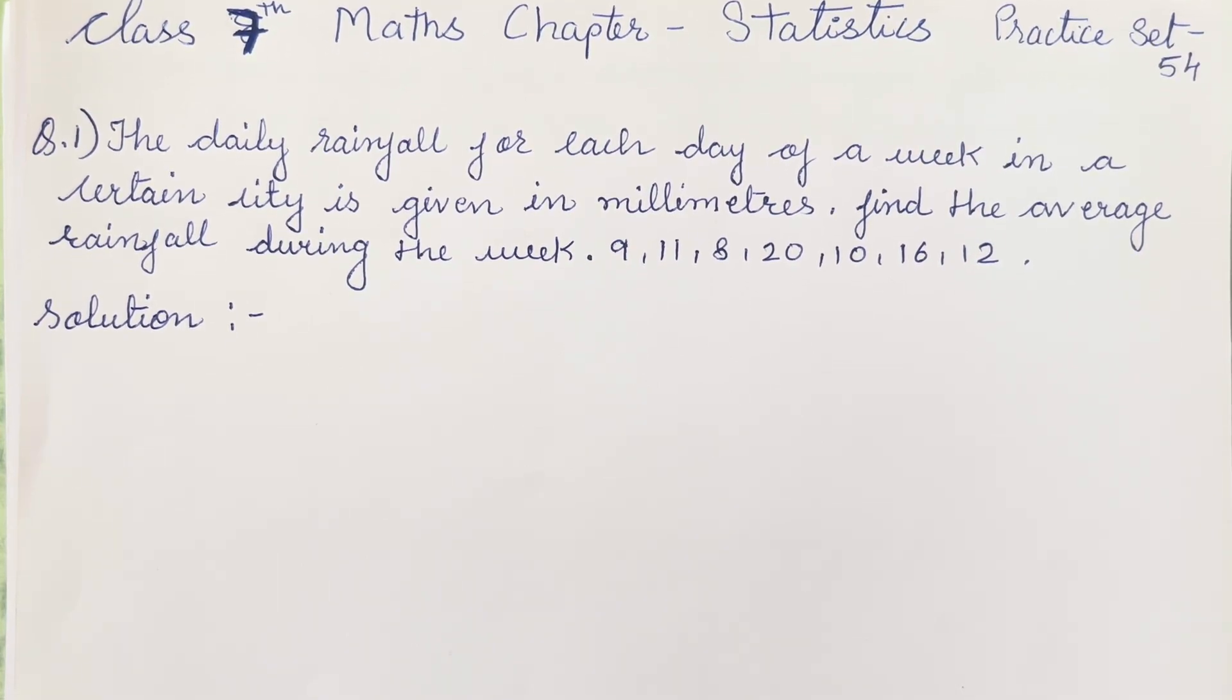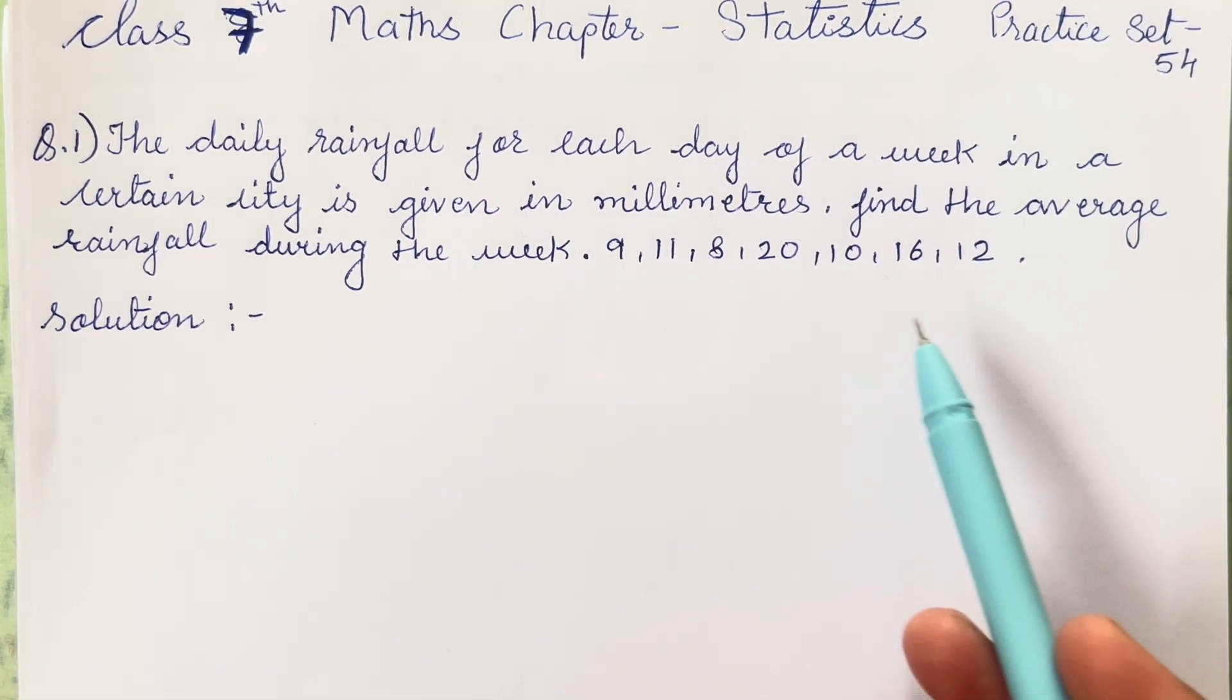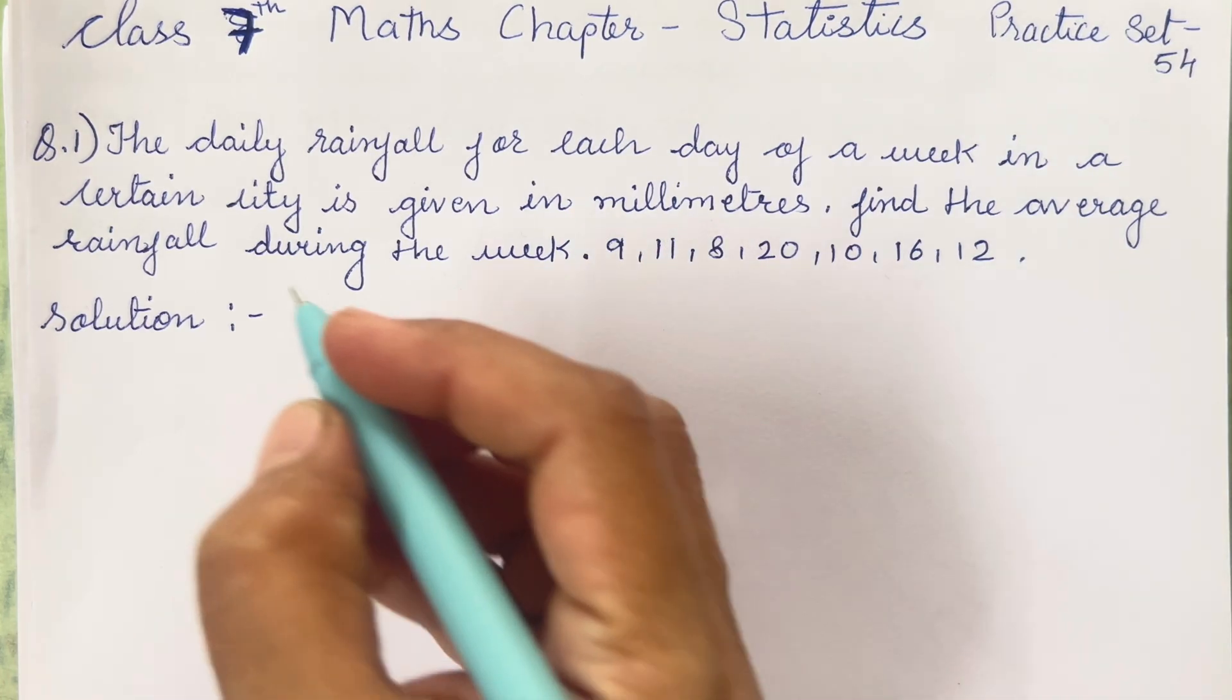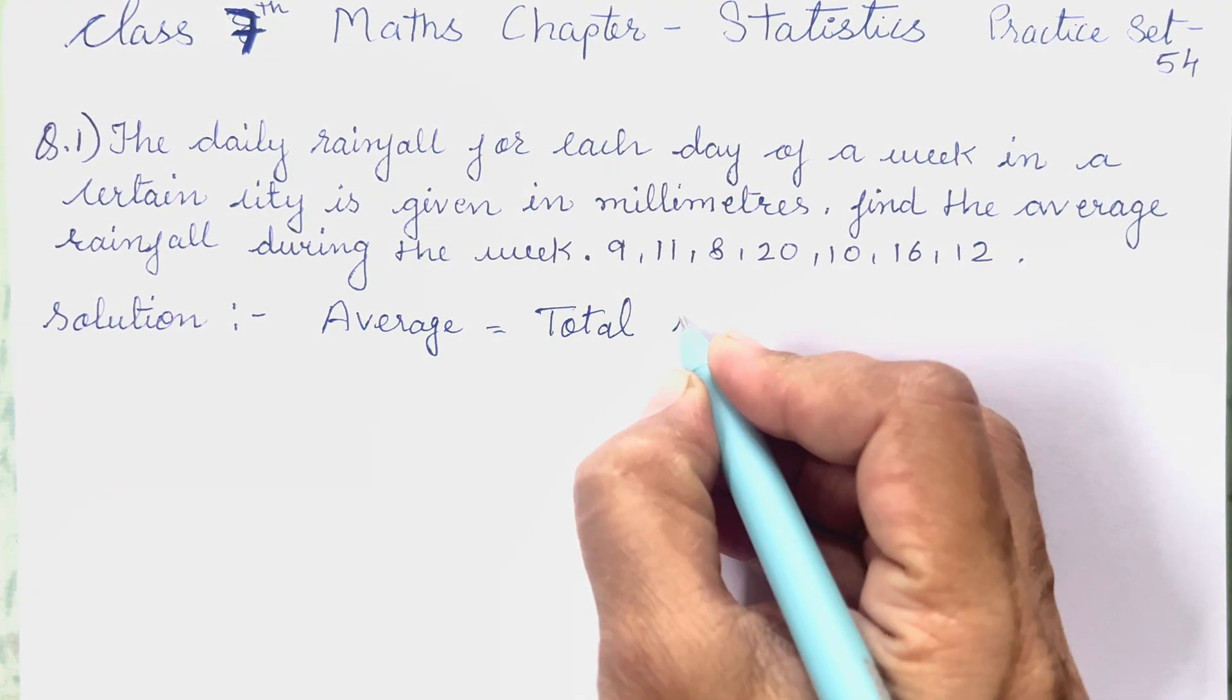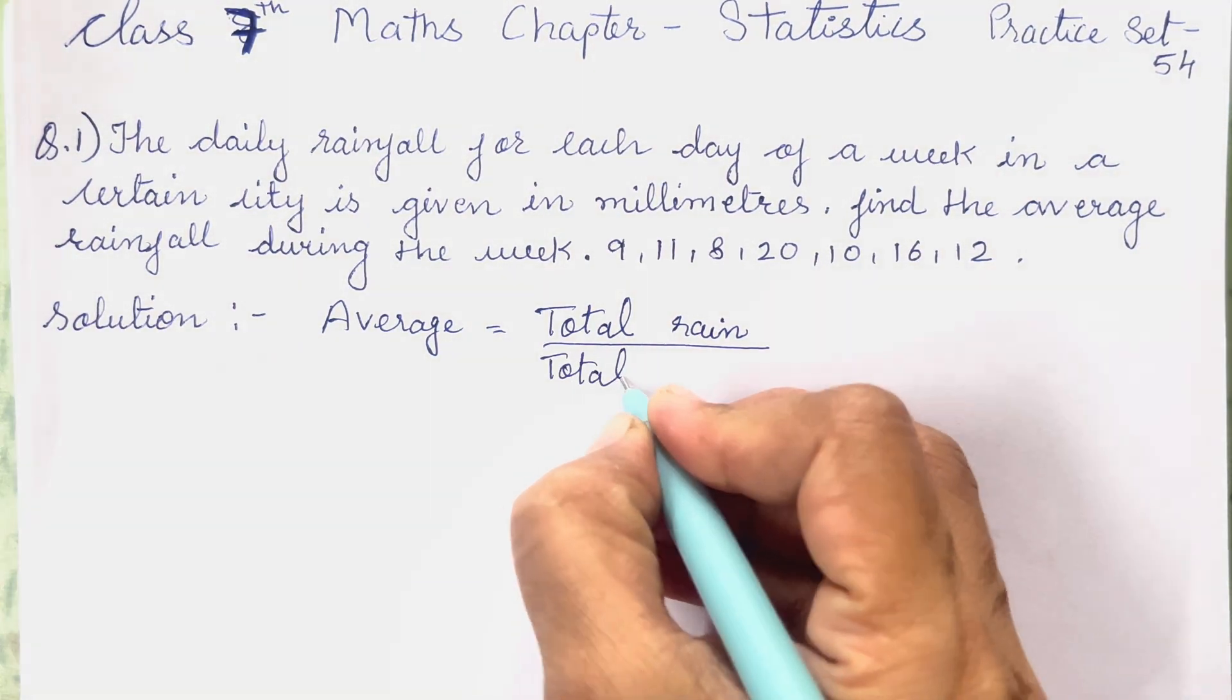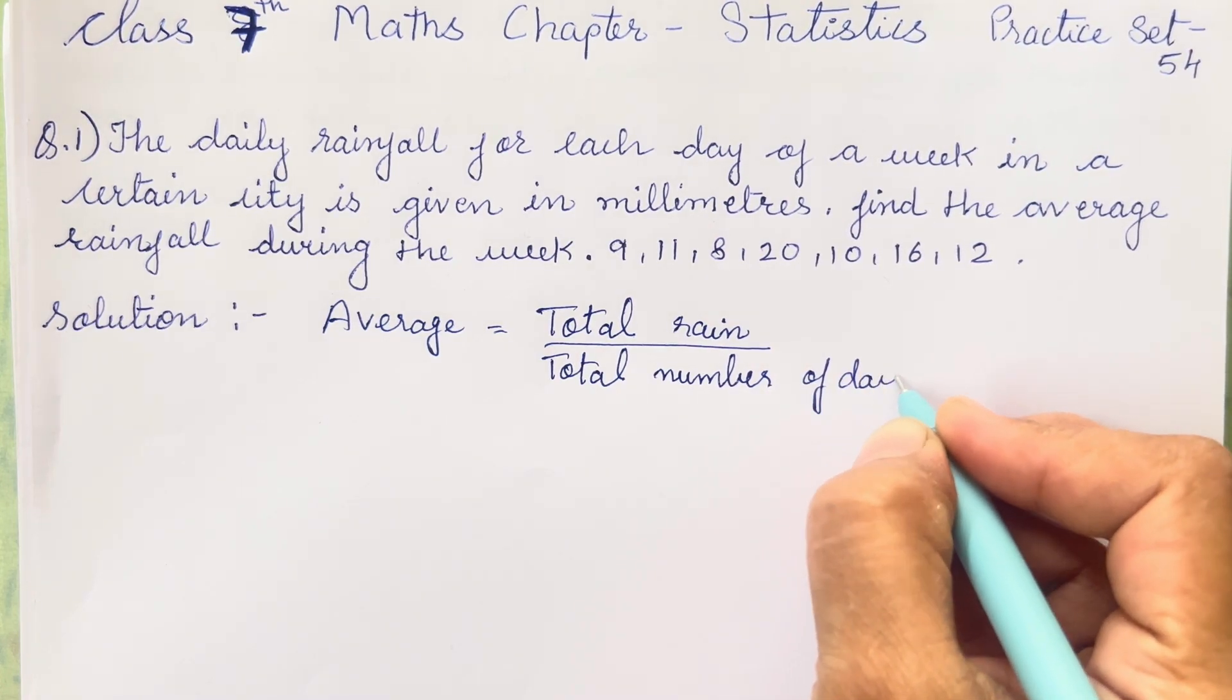The first question is: the daily rainfall for each day of a week in a certain city is given in millimeters. Find the average rainfall during the week. So during a week this much amount of rainfall was been recorded in millimeters. What we have to do? We have to find the average. For finding average what is going to be the formula? It will be total rain in millimeters on total number of days.